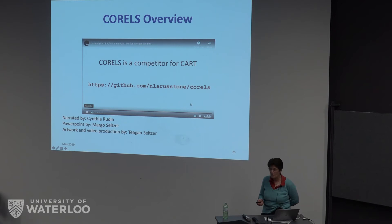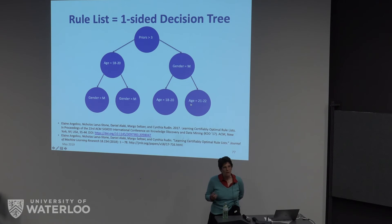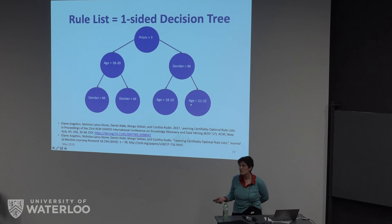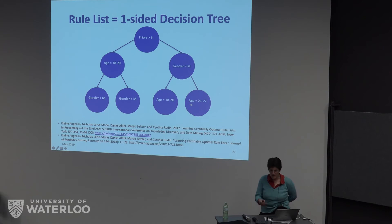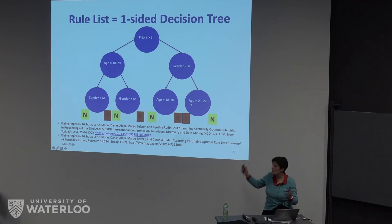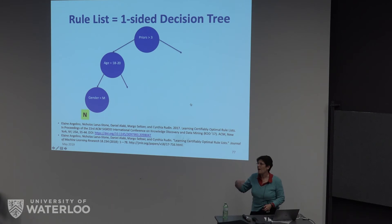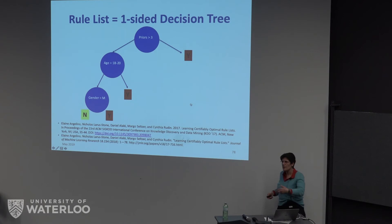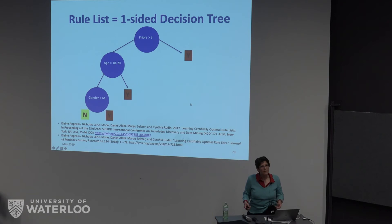The one-line summary: we solve NP-hard problems to optimality on laptops, for real problems from fields like criminal recidivism, medical stroke prediction, and similar. Cynthia is the math genius and I advise students on clever systems things. A decision tree splits based on some attribute and at the leaves makes predictions. A rule list is a one-sided decision tree — you find the most important attribute, make a prediction based on that, then look for the next one. We're also working on optimal decision tree algorithms and think we have a pretty competitive algorithm there.